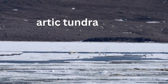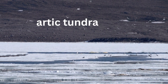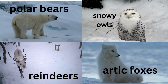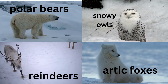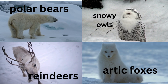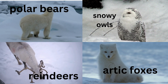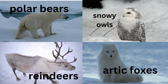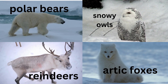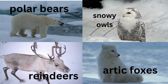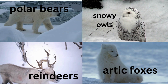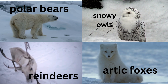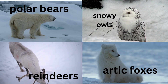Arctic tundra. The arctic tundra is a cold, treeless habitat found in the northernmost parts of the world, characterised by permafrost and harsh winters. Polar bears, arctic foxes, snowy owls, reindeer and musk oxen are well suited to the tundra's icy conditions. They have thick fur to keep warm and large paws for walking on snow and finding food in this frigid environment.